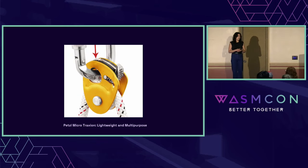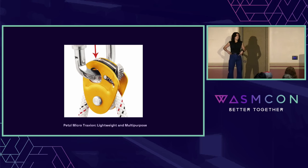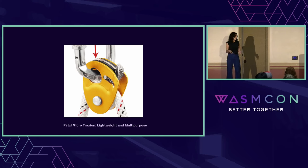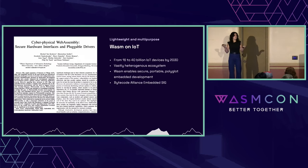Beyond conserving energy by walking efficiently, another way to conserve energy going up a mountain is to carry as little weight as possible. One way mountaineers do this is by optimizing the weight on their harness, using multi-purpose gear instead of a jumble of different items. My favorite piece of gear is called the Petzl Microtraction — you can use it as a pulley or for ascension. And WebAssembly is very good at being a lightweight multi-purpose tool.